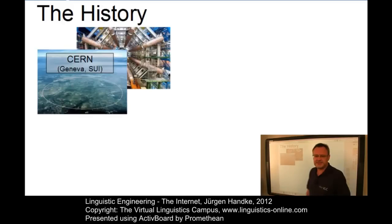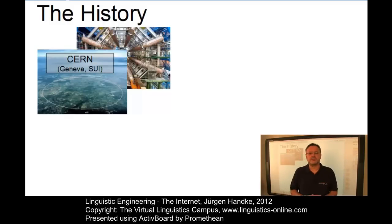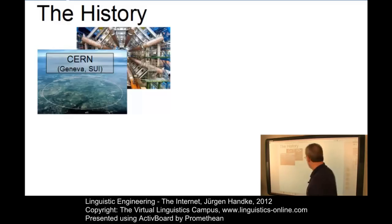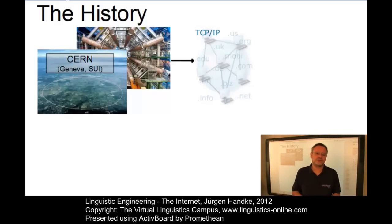In 1989, the European Laboratory for Particle Physics, or CERN, located in Geneva, Switzerland, connected to the Internet. This research center provided much of the impetus for the adoption of connectivity and distributed computing standards such as TCP/IP. We will talk about this standard later on.